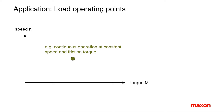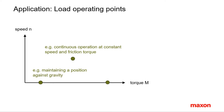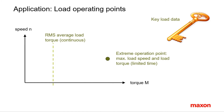For example, there can be a constant operation at a given torque and speed. There might be an operation at higher speed but at lower torque, or maintaining a position against some external force at zero speed. Another possibility is speeding up with some mass inertia to overcome — usually that's where the highest torque occurs. Regarding torque, we condense all the operation points into a few key values: the average, RMS load torque, and the extreme operation point.